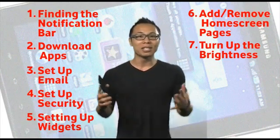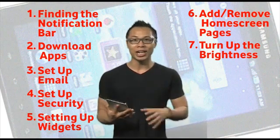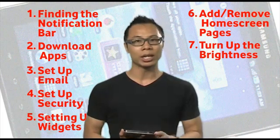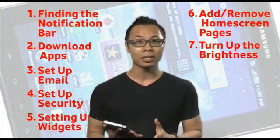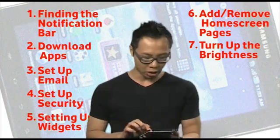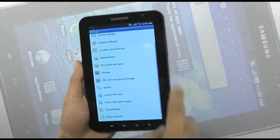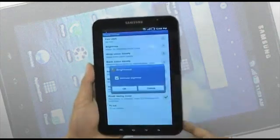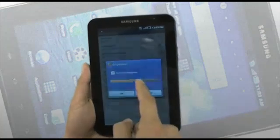Sometimes when you're outside and looking at your screen you can't see it because it's not bright enough. One easy way to fix this is to manually adjust the brightness. You can do that by going into Settings, then Display Settings, and when you see Brightness, just untick auto brightness and turn it up.